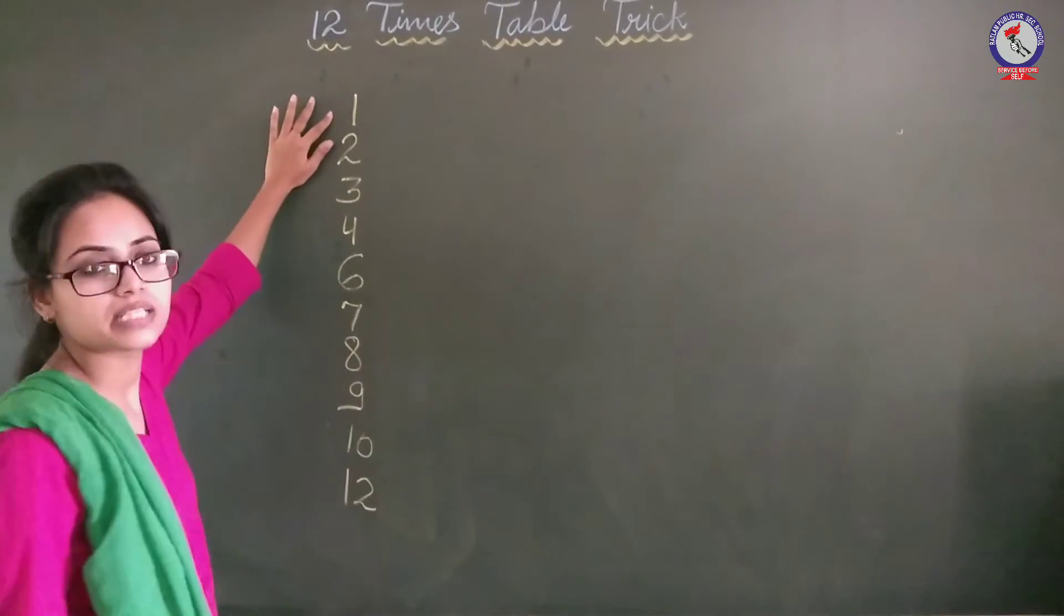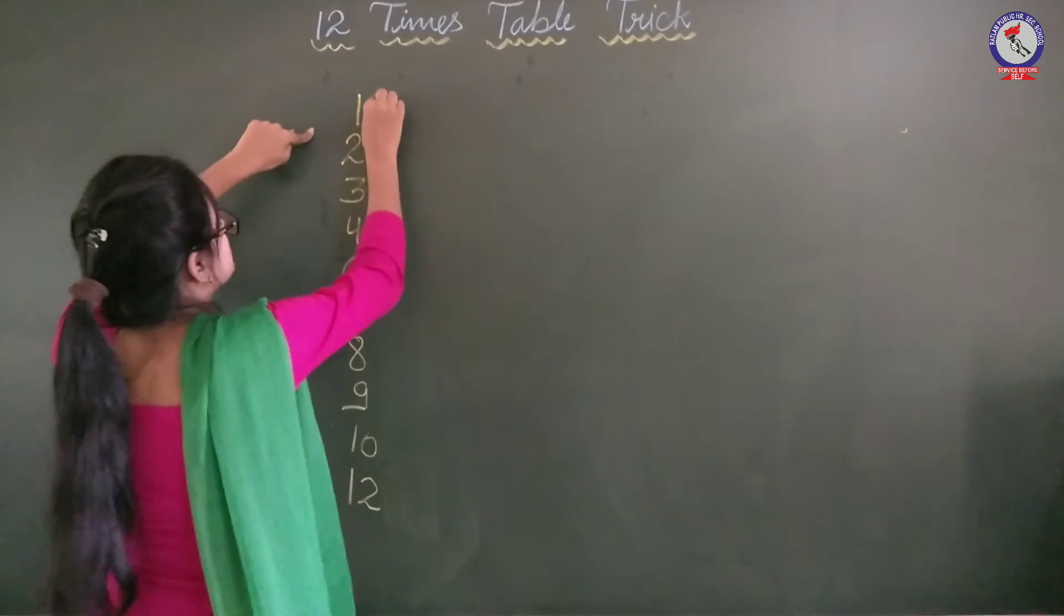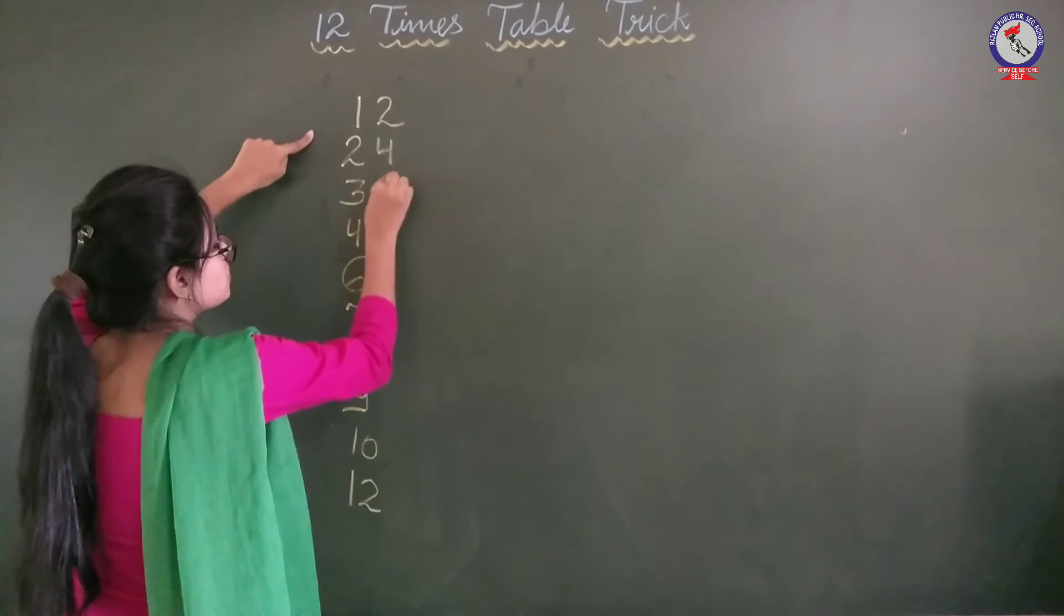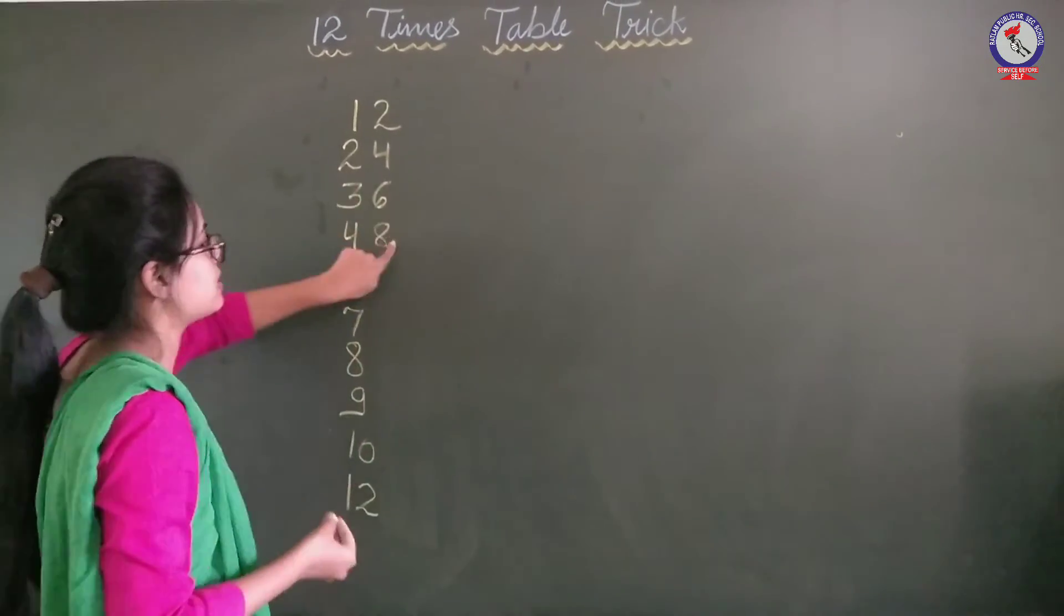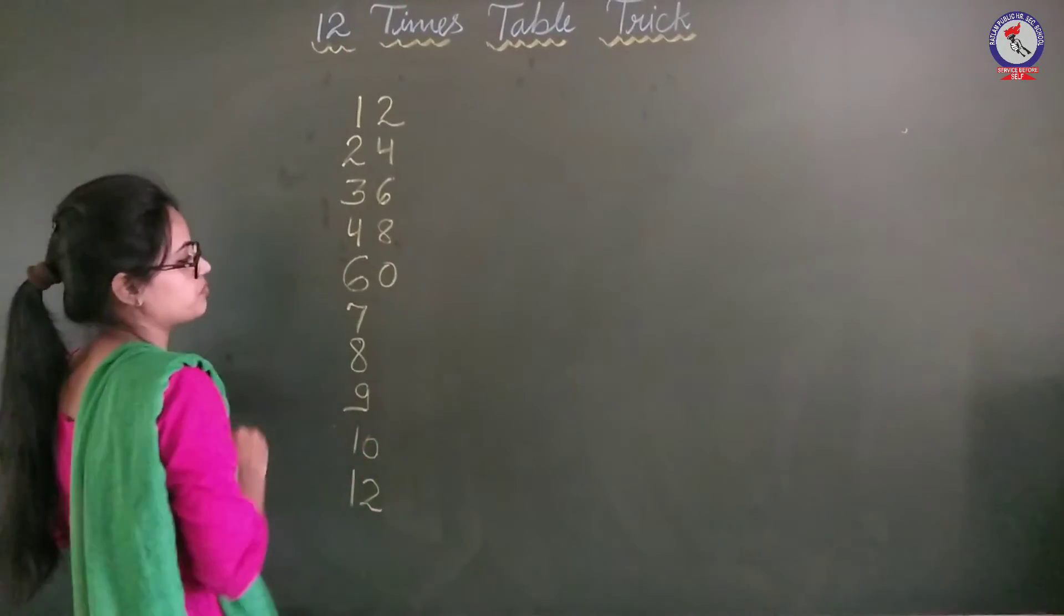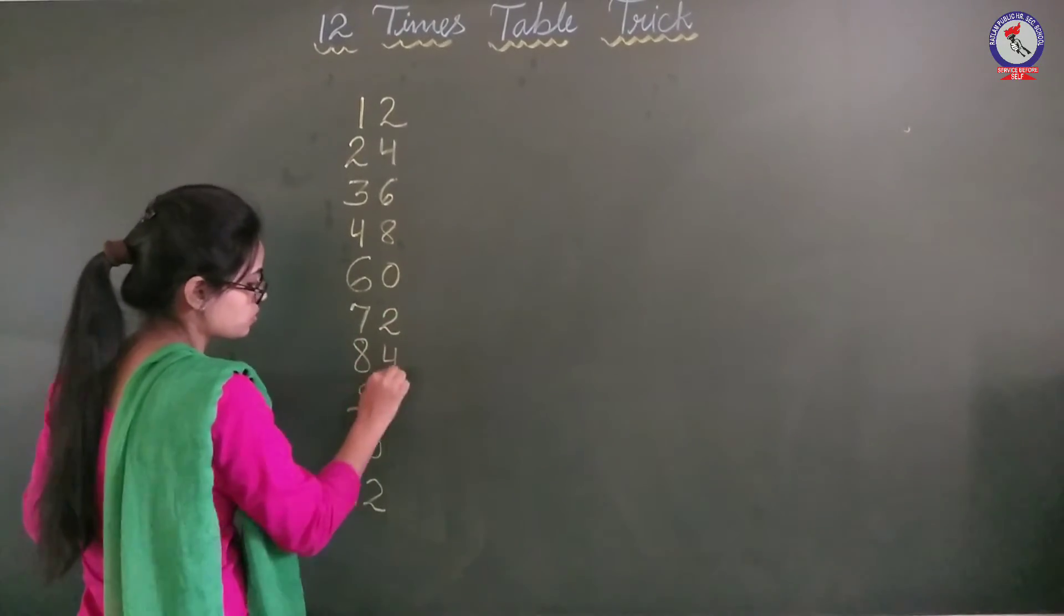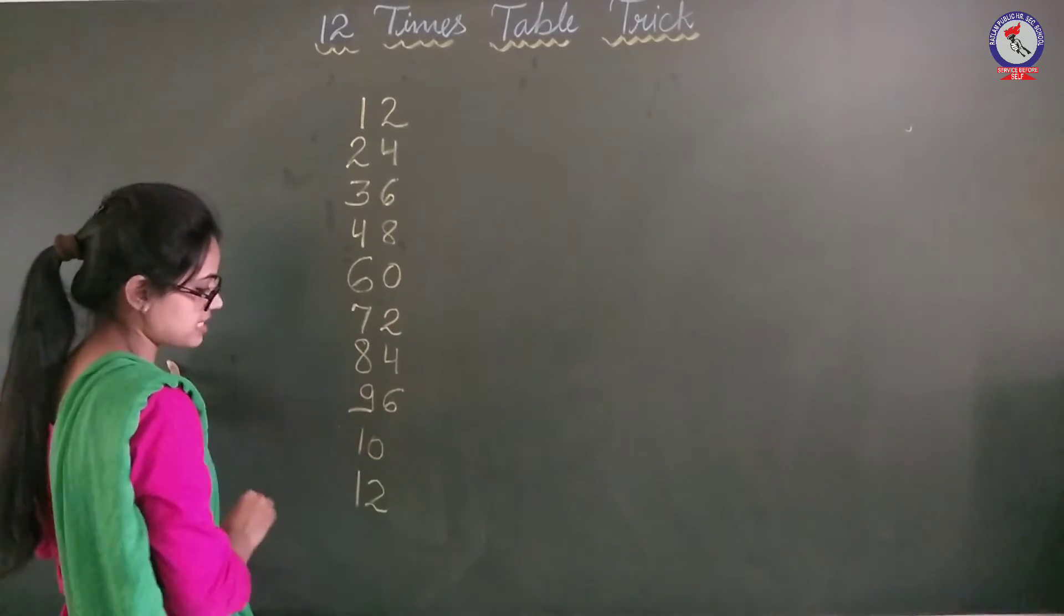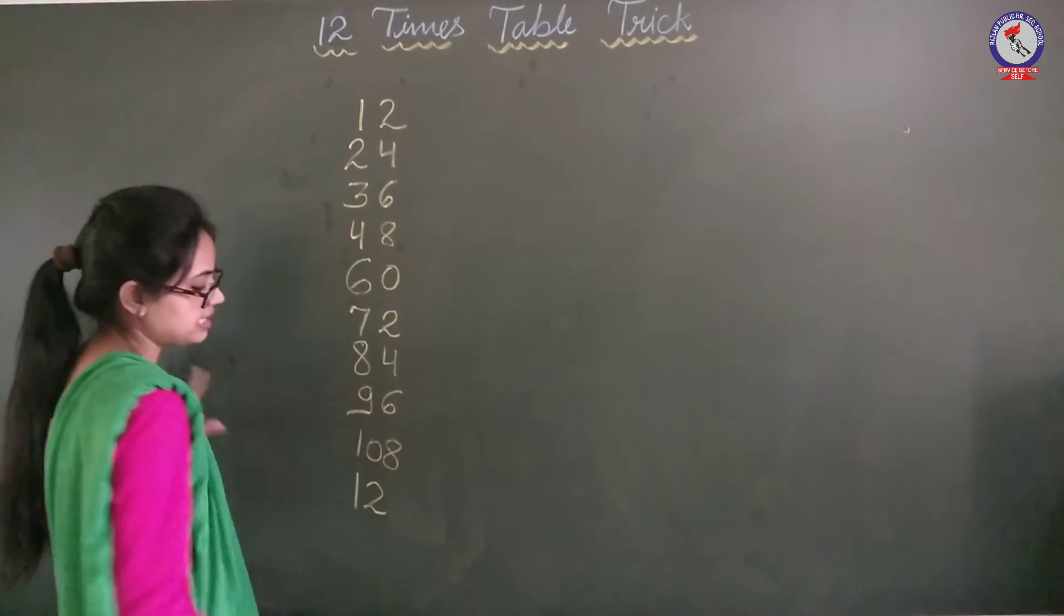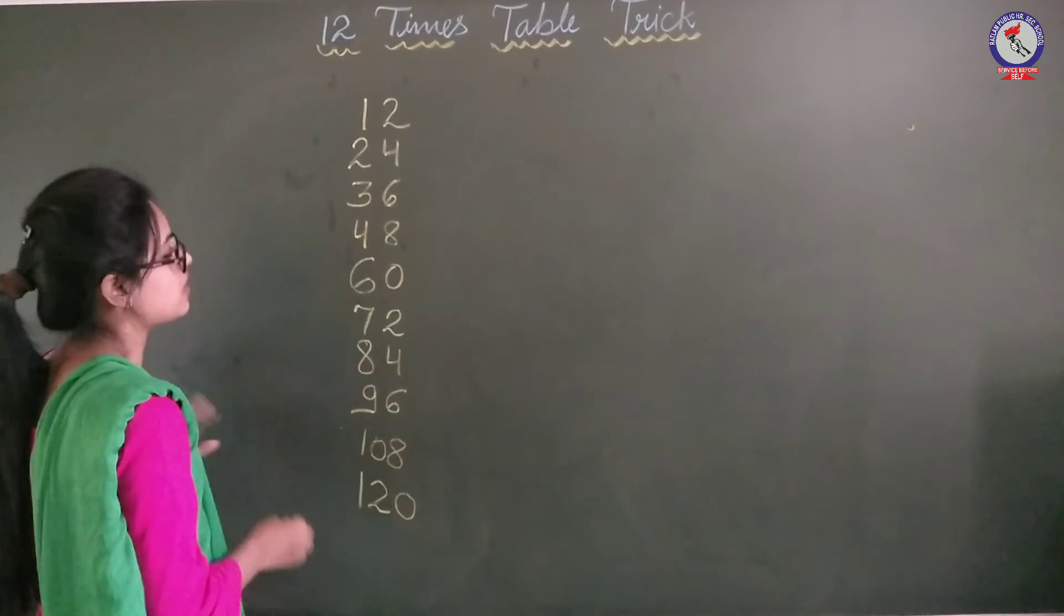Now we will arrange table of 2 again here. This is 2 1s are 2, 2 2s are 4, 2 3s are 6, 2 4s are 8. Then after 8 there is 10 but we will write only 0. Now again 2 1s are 2, 2 2s are 4, 2 3s are 6, 2 7s are 12, 2 4s are 8 and 2 5s are 10 but we will write only 0.